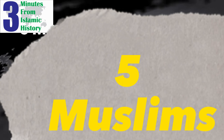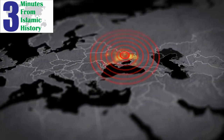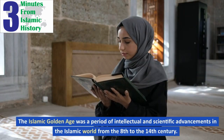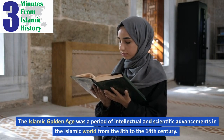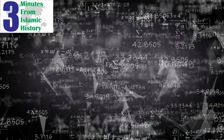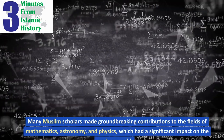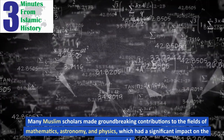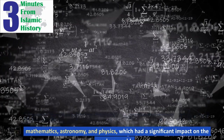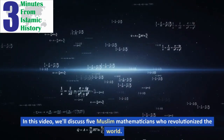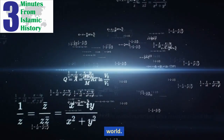5 Muslim Mathematicians of Islamic History. The Islamic Golden Age was a period of intellectual and scientific advancements in the Islamic world from the 8th to the 14th century. Many Muslim scholars made groundbreaking contributions to the fields of mathematics, astronomy, and physics, which had a significant impact on the modern world. In this video, we'll discuss 5 Muslim mathematicians who revolutionized the world.